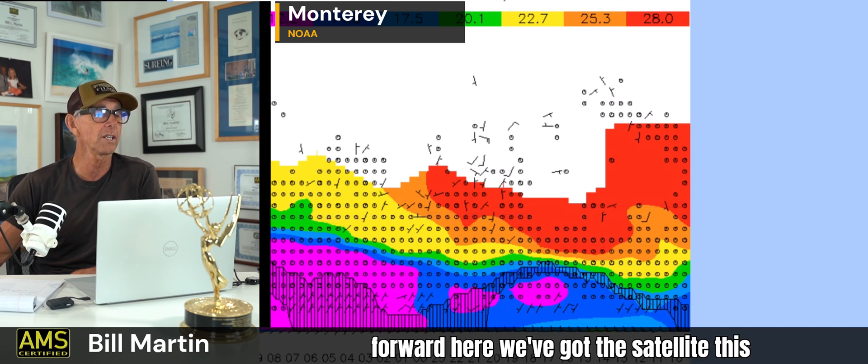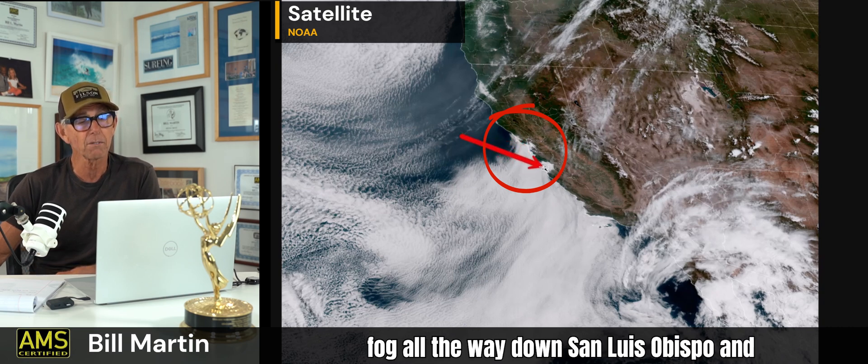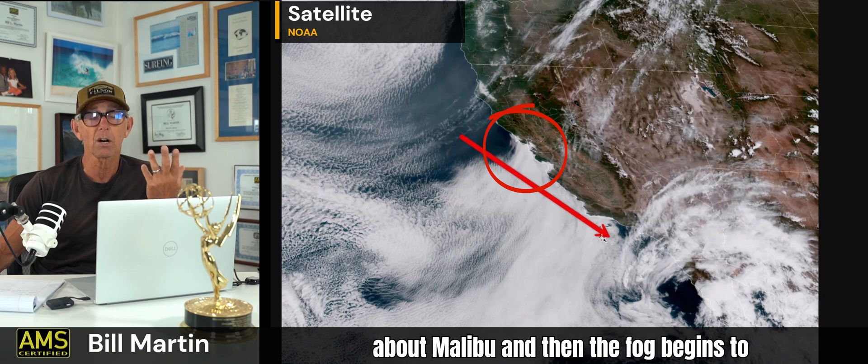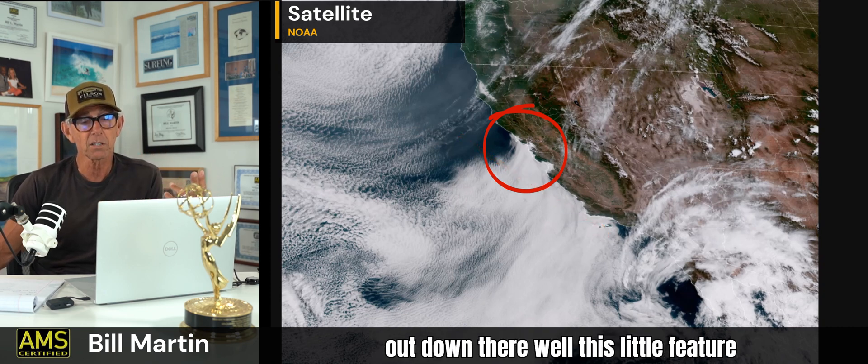So let's move forward here. We've got the satellite — this is an awesome depiction. This is the fog at Point Reyes we were looking at. You can see the fog is really filled in along the coast. San Francisco, marine layer, deep inland — this is as of about lunchtime today. Salinas Valley, a lot of fog. Fog all the way down to San Luis Obispo and south down to Southern California, just to about Malibu. And then the fog begins to clear out. Why does the fog clear out down there? Well, this little feature right here — there's a low.